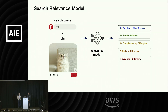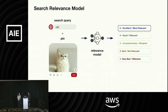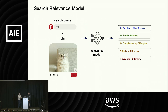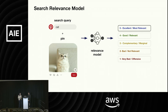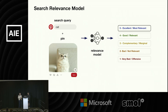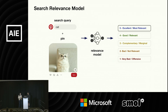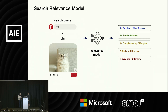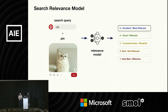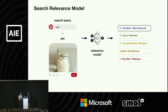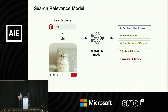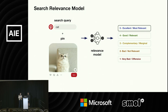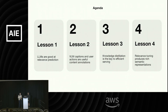Here's our search relevance model, which is essentially a classification model. Given a search query and a pin, the model will predict how relevant the pin is to the search query. To measure this, we use a five-point scale ranging from the most relevant to most irrelevant.